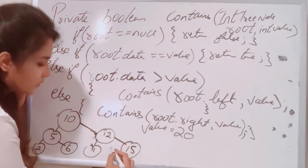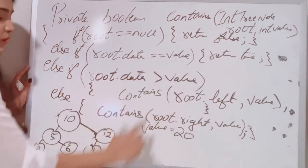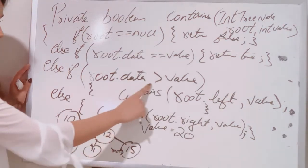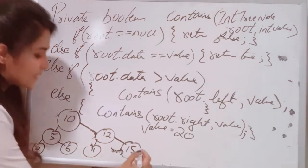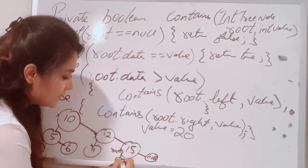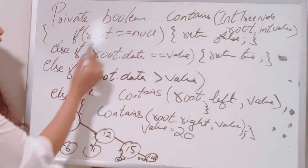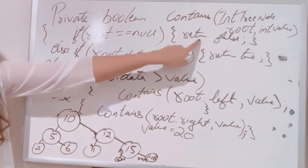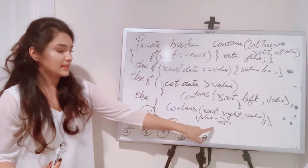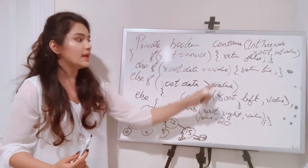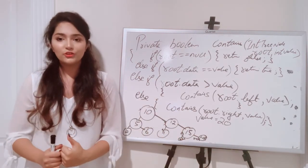Again: is 15 null? No. Is 15 equal to 20? No. Is 15 greater than 20? No — go to else, contains(root.right, value). Now root.right is null, so root becomes null. We go back to the top and check: if root equals null — yes, return false. This shows that 20 does not exist in our tree. Hopefully you have got the idea of how the binary tree and recursion work together. That's it for this video, thank you, bye.